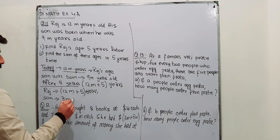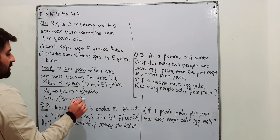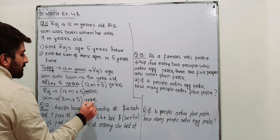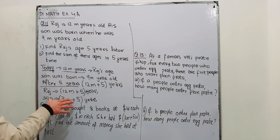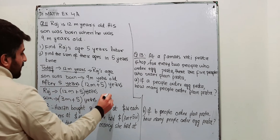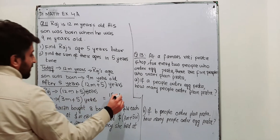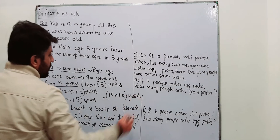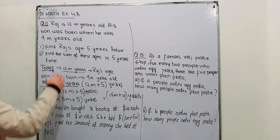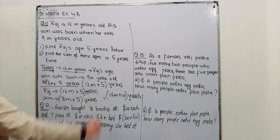After 5 years you simply add 5 to today's age of his son. These are the respective ages of Raj and his son. If you want to add them: 12m plus 3m is 15m, and 5 plus 5 is 10 years. This is the answer — the combined age, the sum of the ages of Raj and his son.